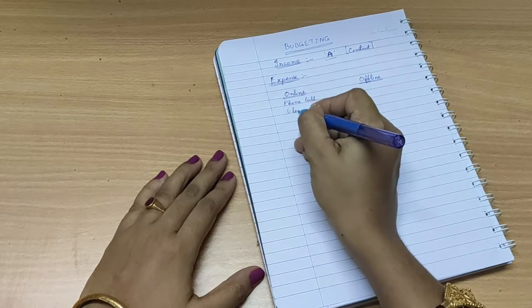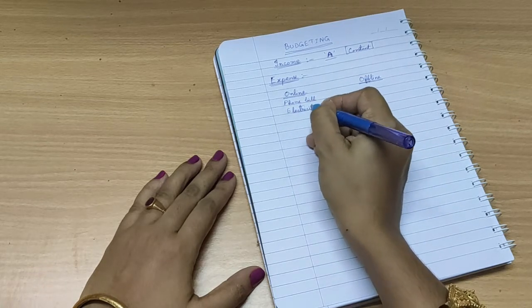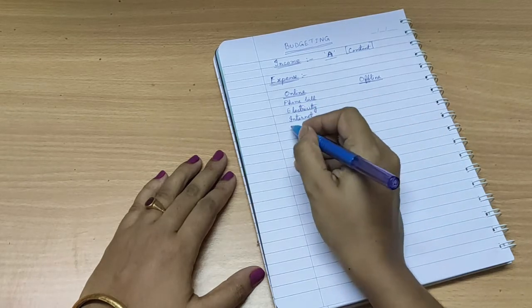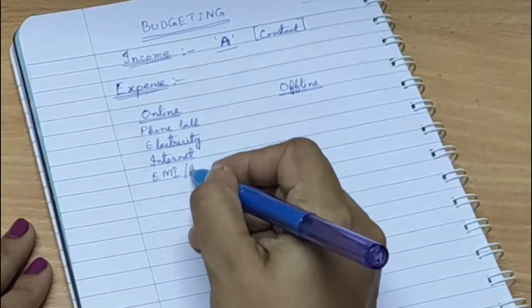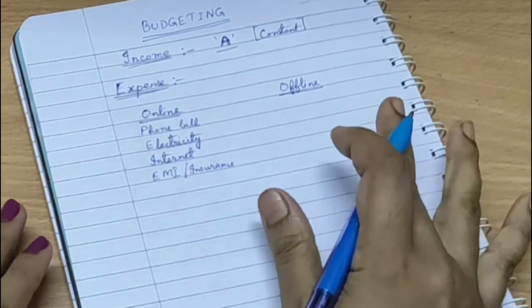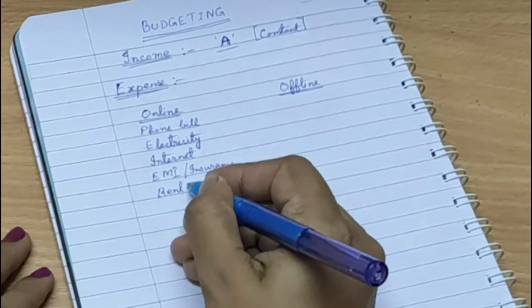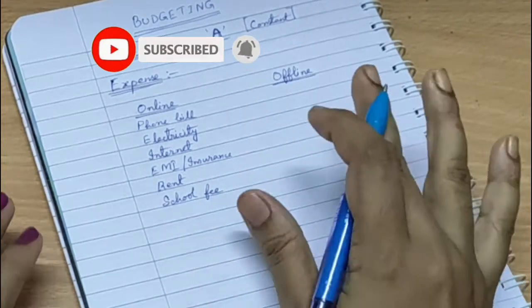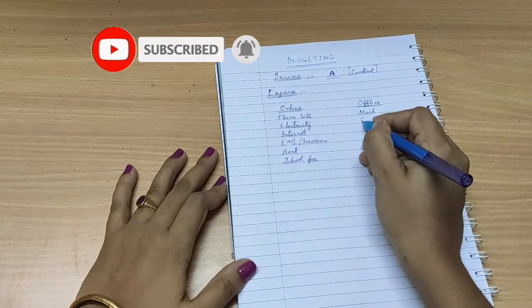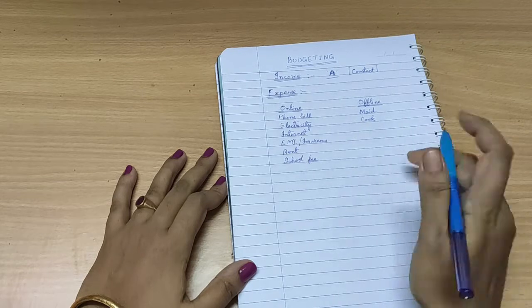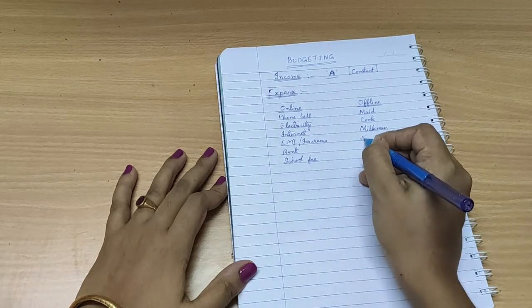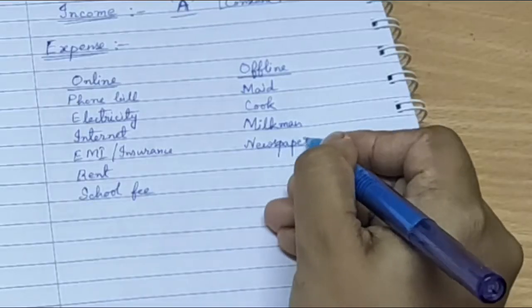So in the online category there are phone bill, electricity bill, internet, any health insurance, car insurance, or an EMI if you have, your house rent, school fee for kids, everything. Offline payment has to be done to the maid, cook, milkman, newspaper vendor, fruits and vegetable shop, to the non-veg items and so on.